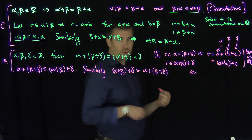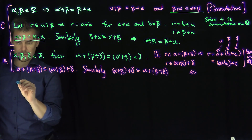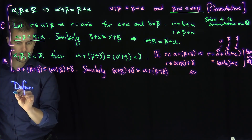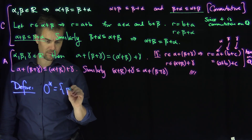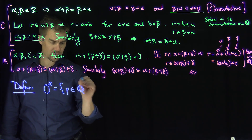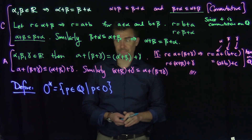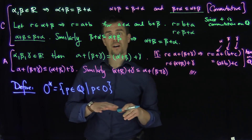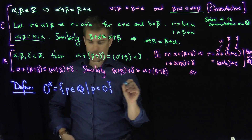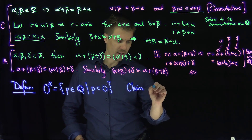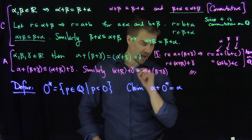Now I need to show that there's also an additive identity, and we have a good candidate. I'm going to define 0-star as the set of P in Q such that P is less than 0 — just the ordinary rational number 0, which we know exists from our previous construction. This Dedekind cut corresponds to the rational number 0, and I claim that alpha plus 0-star is equal to alpha.